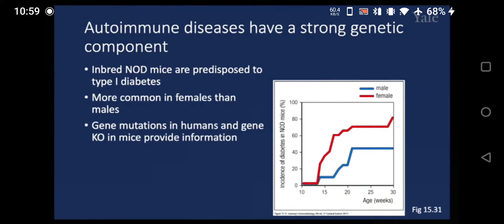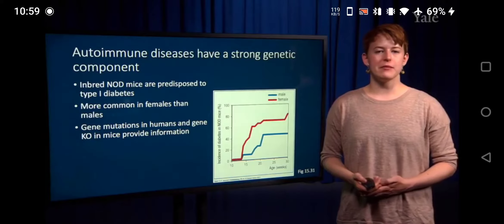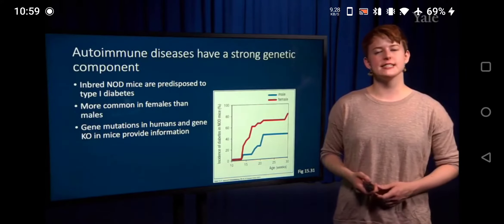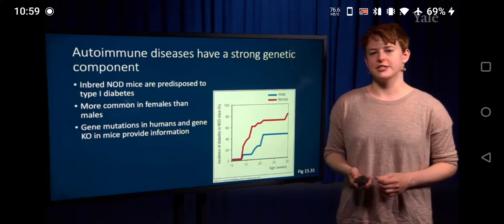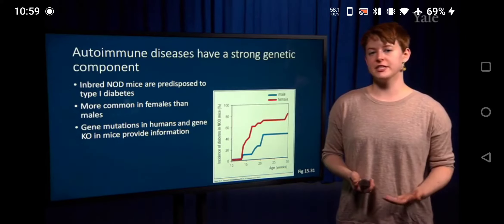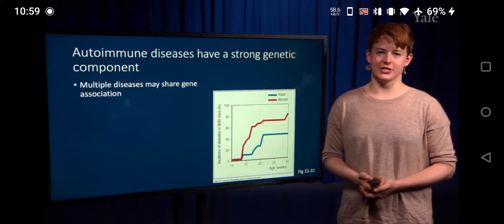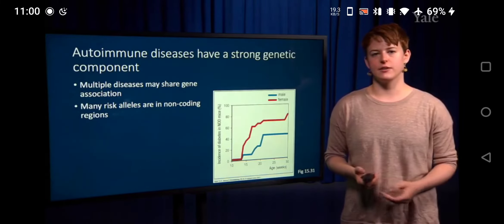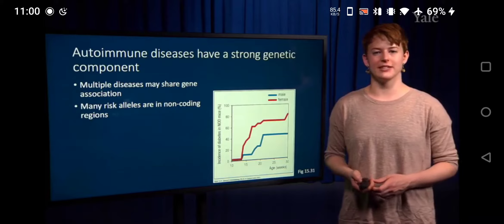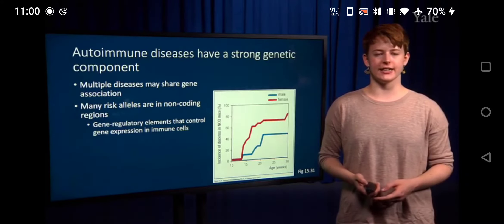We can also do studies where we look at gene mutations, both in humans and in mice where we can do gene knockouts, to help provide information. Multiple diseases may actually share gene associations. Interestingly, many risk alleles — areas of the genome associated with a risk of developing autoimmunity — are in non-coding regions of the genome, and in particular these seem to be found frequently in gene regulatory elements that help control gene expression in immune cells, as well as in promoter regions.